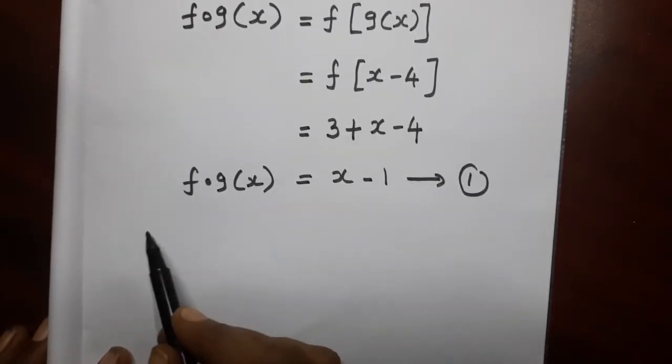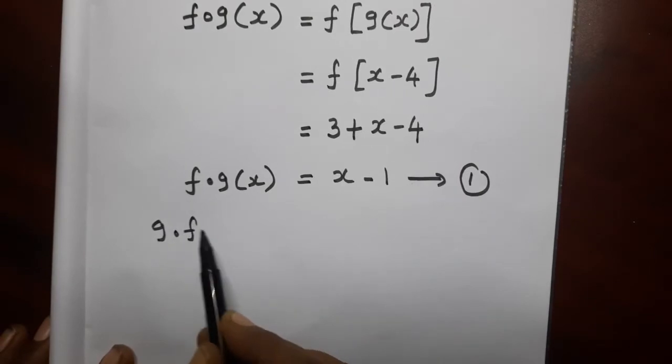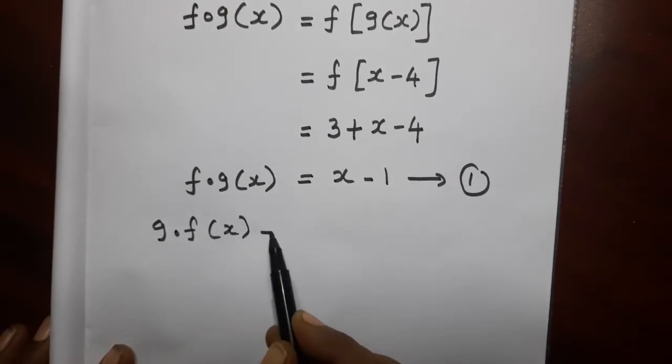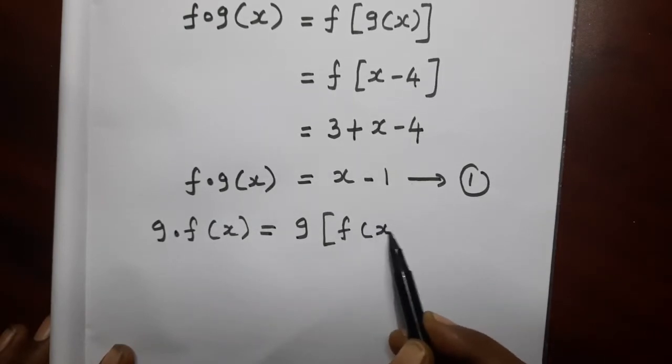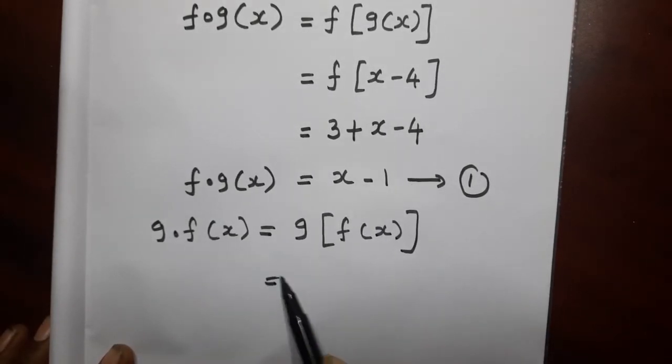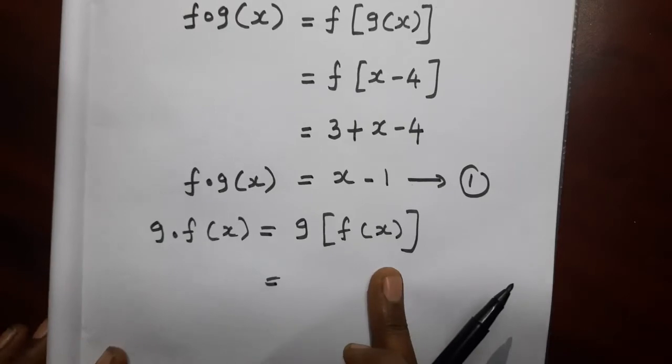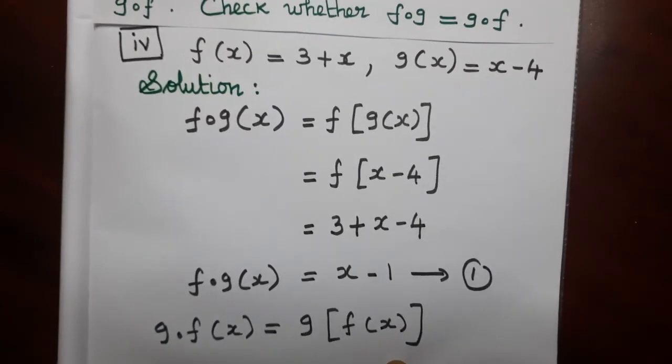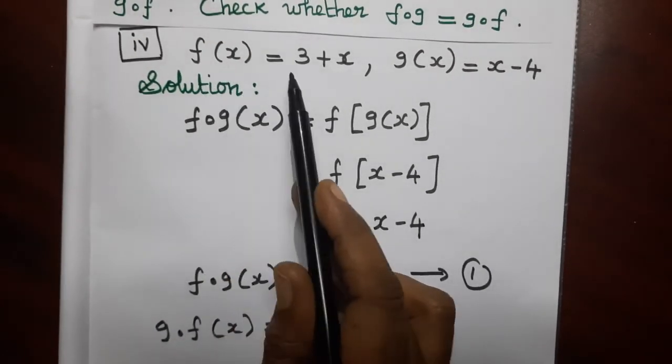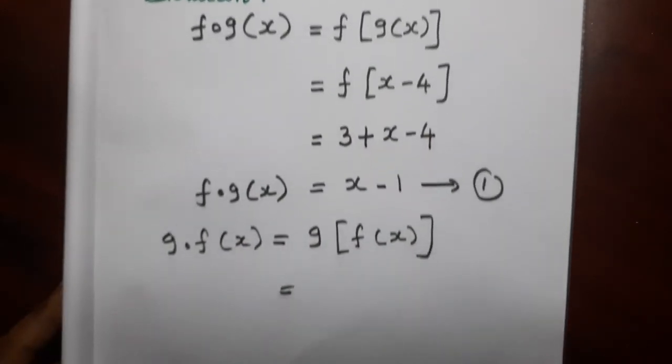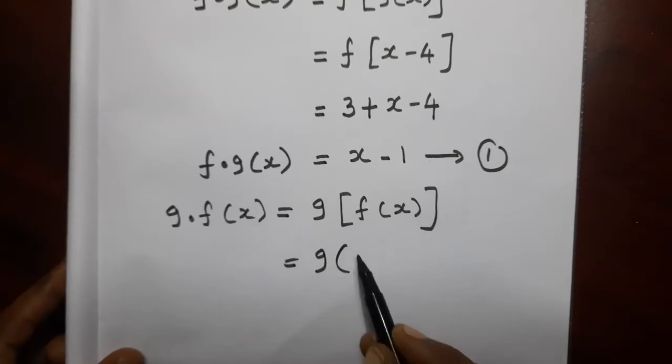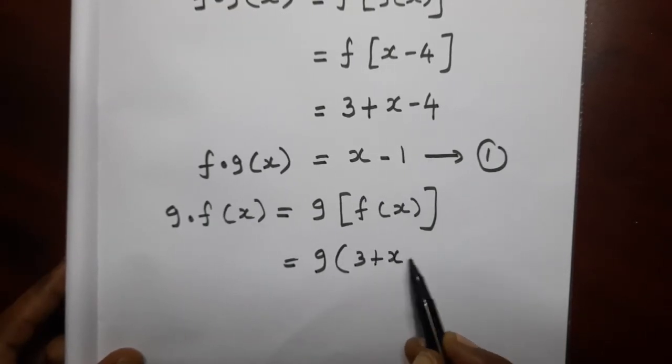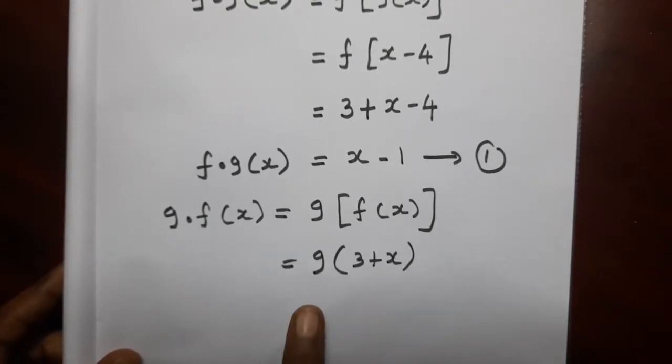Next we need g dot f of x. The formula is g of f of x. In the bracket, f of x is there. The value of f of x is 3 plus x. So where f of x is, we substitute 3 plus x.